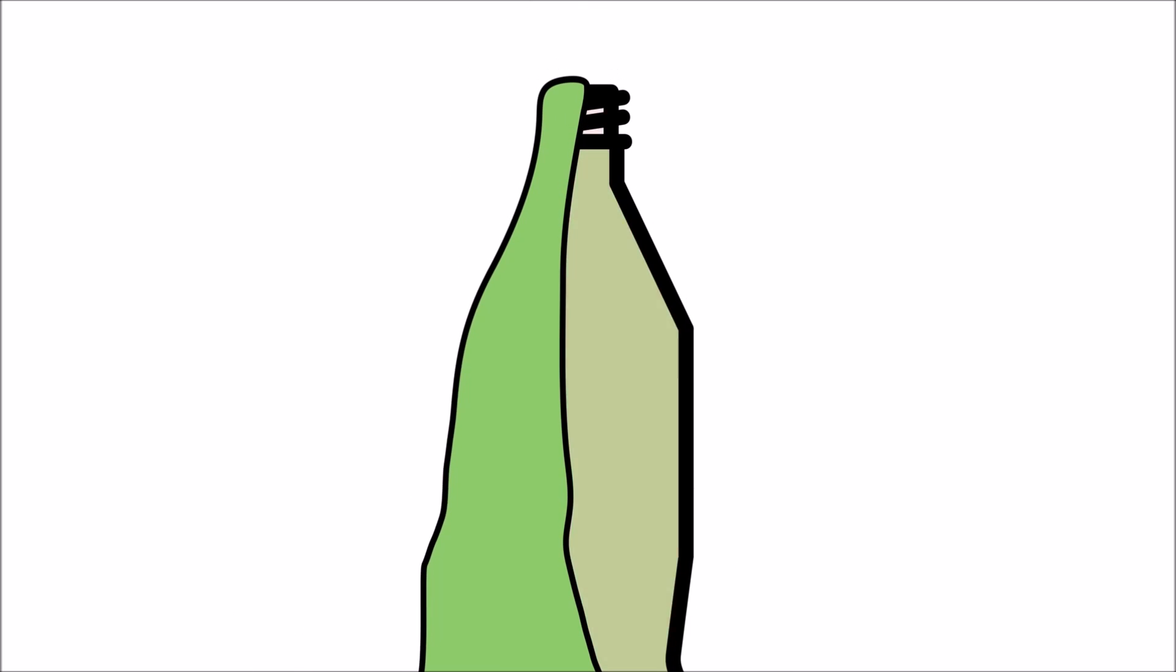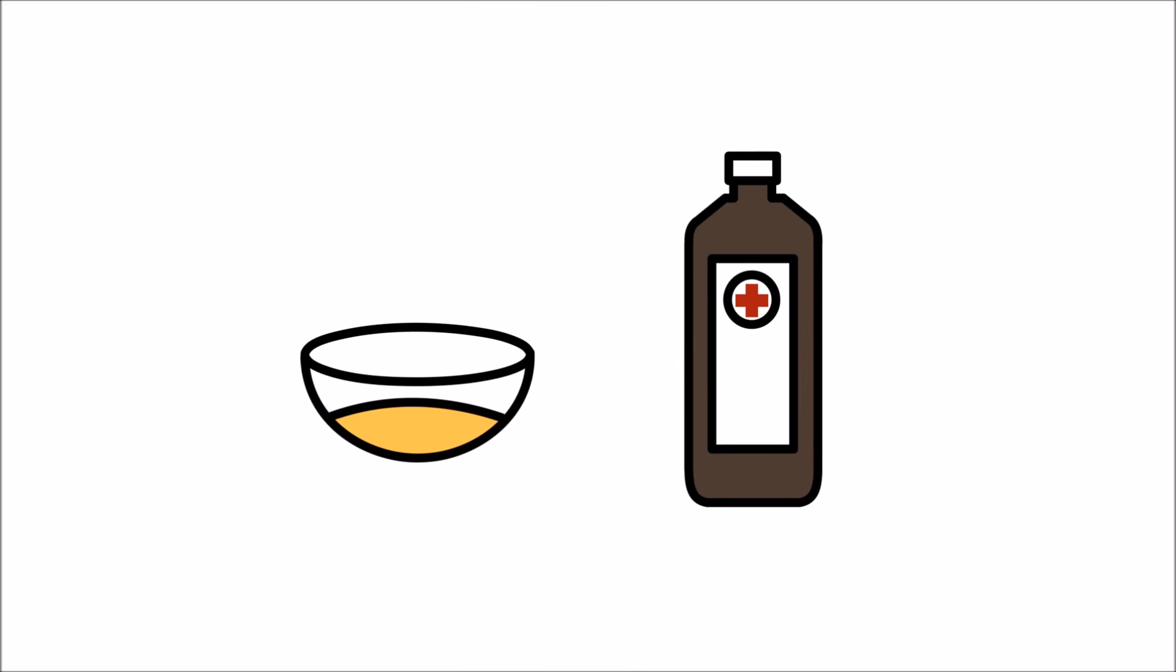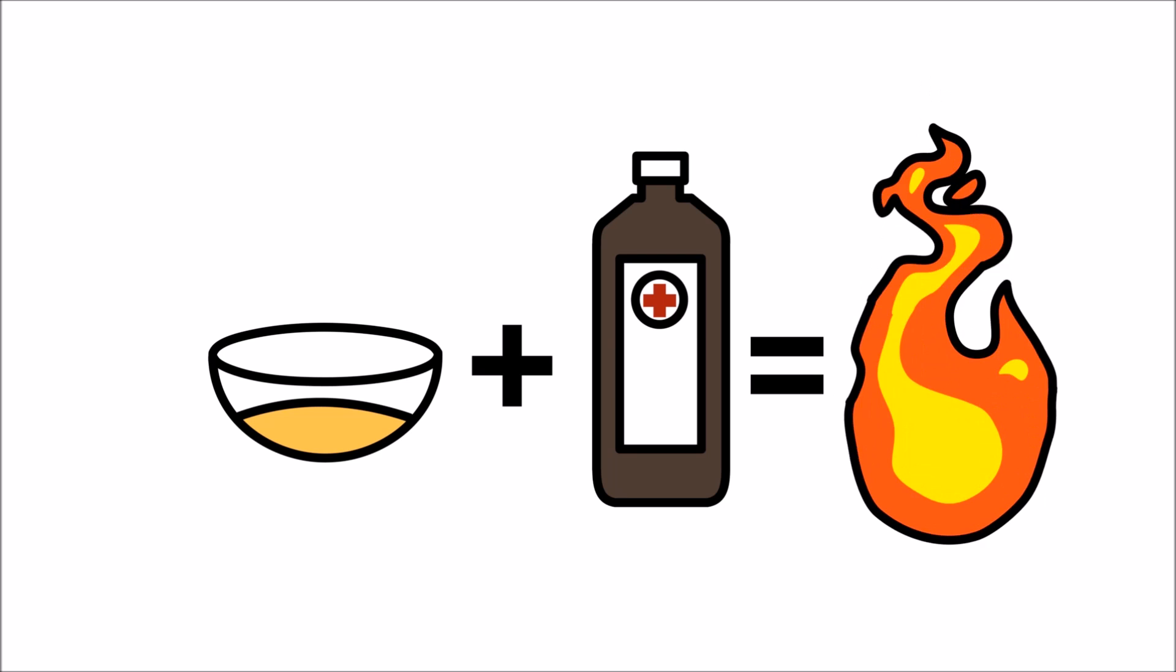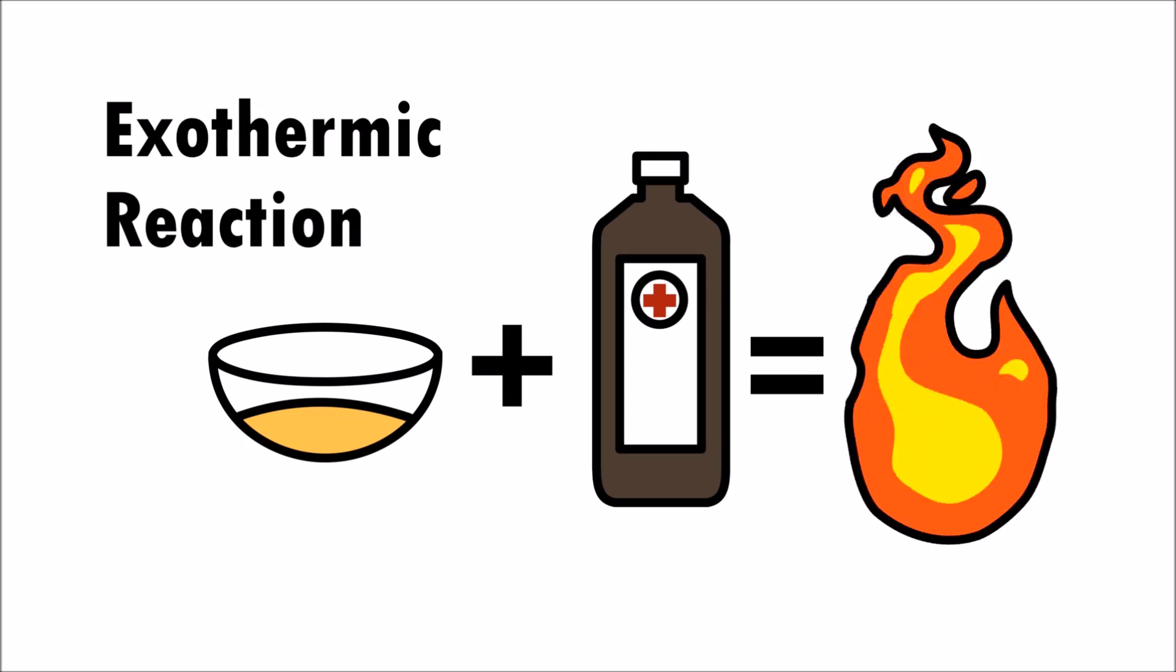During this experiment, the bottle becomes very warm. The reaction between the yeast and the hydrogen peroxide creates a lot of energy in the form of heat. This is called an exothermic reaction.